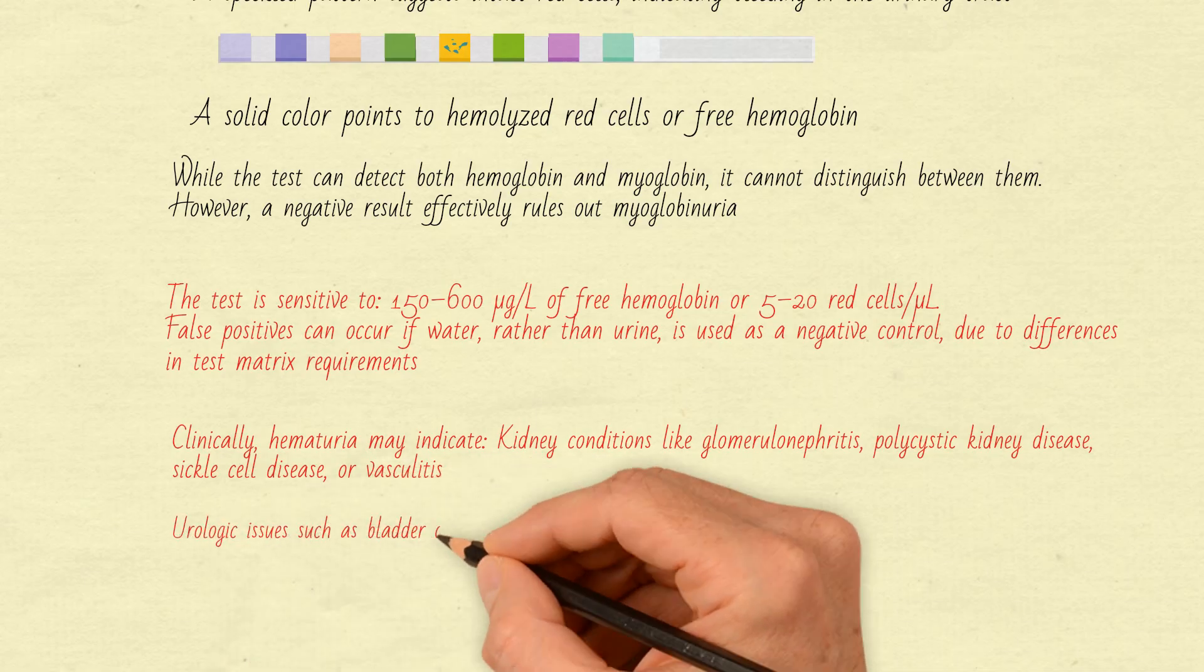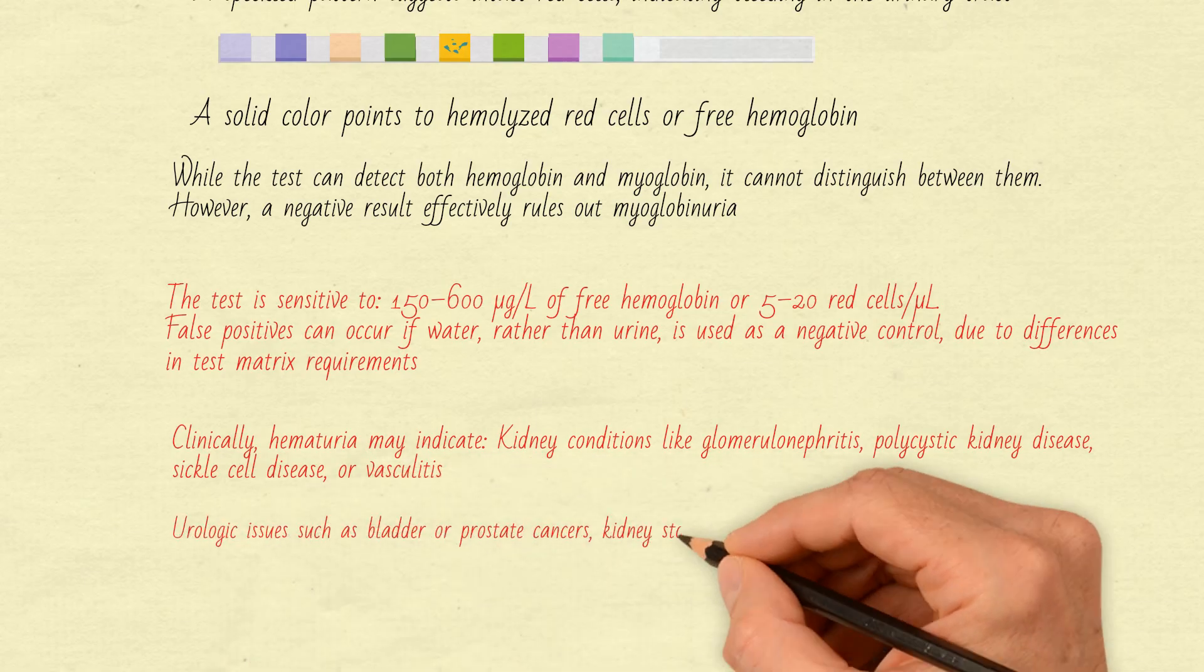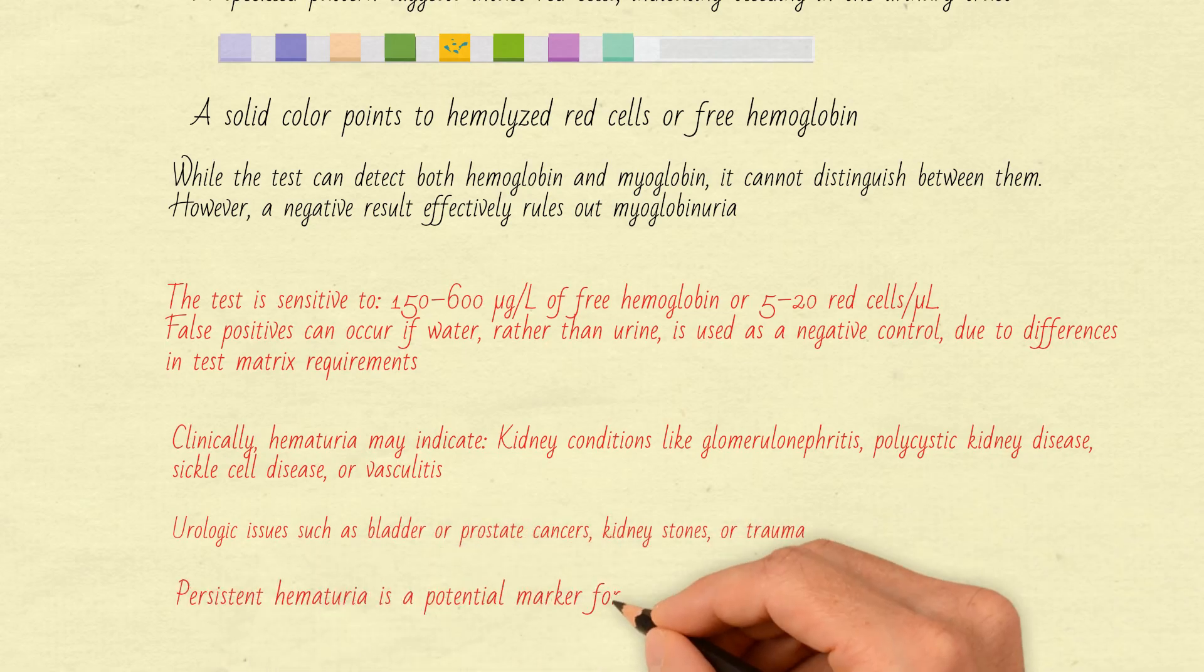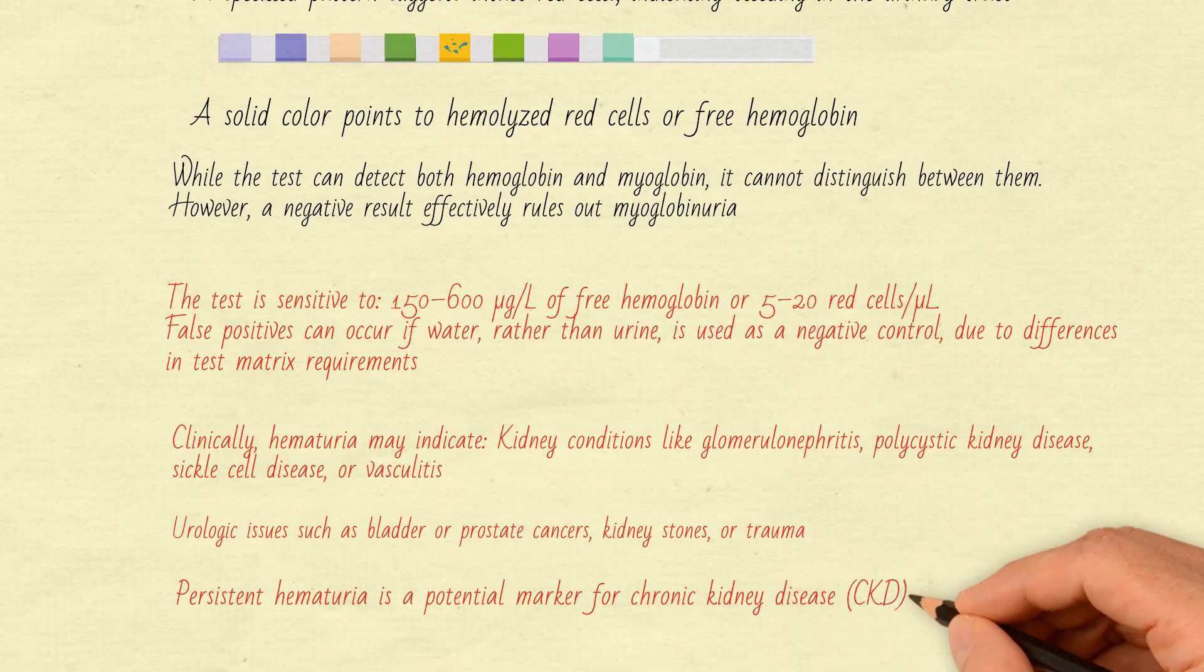Urologic issues such as bladder or prostate cancers, kidney stones, or trauma. Persistent hematuria is a potential marker for chronic kidney disease (CKD).